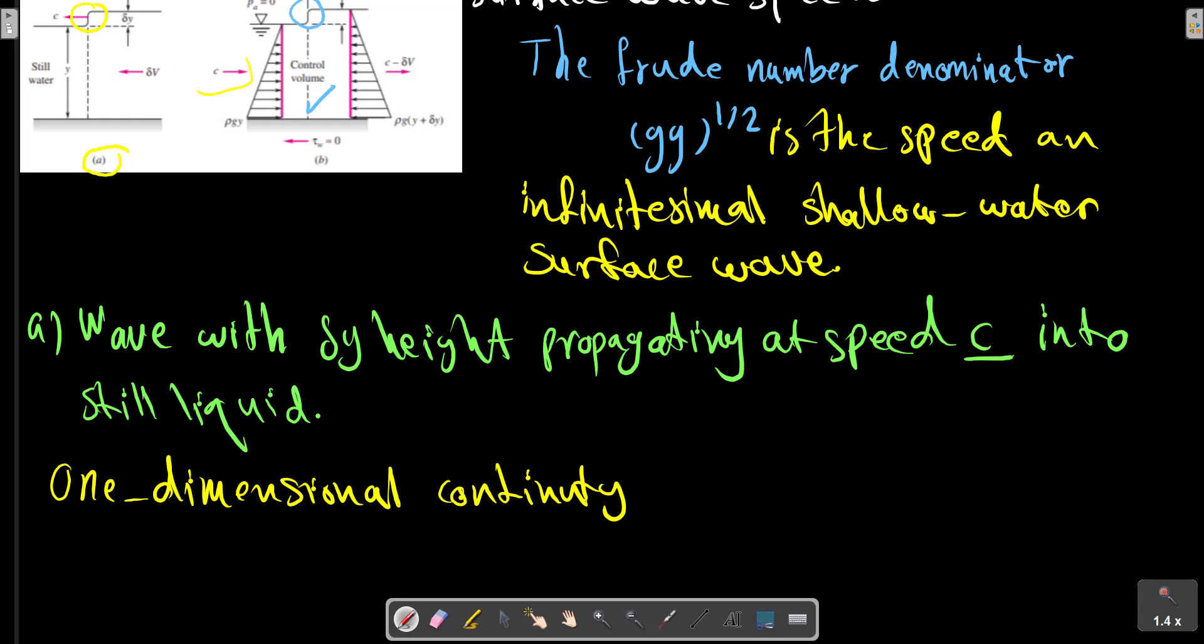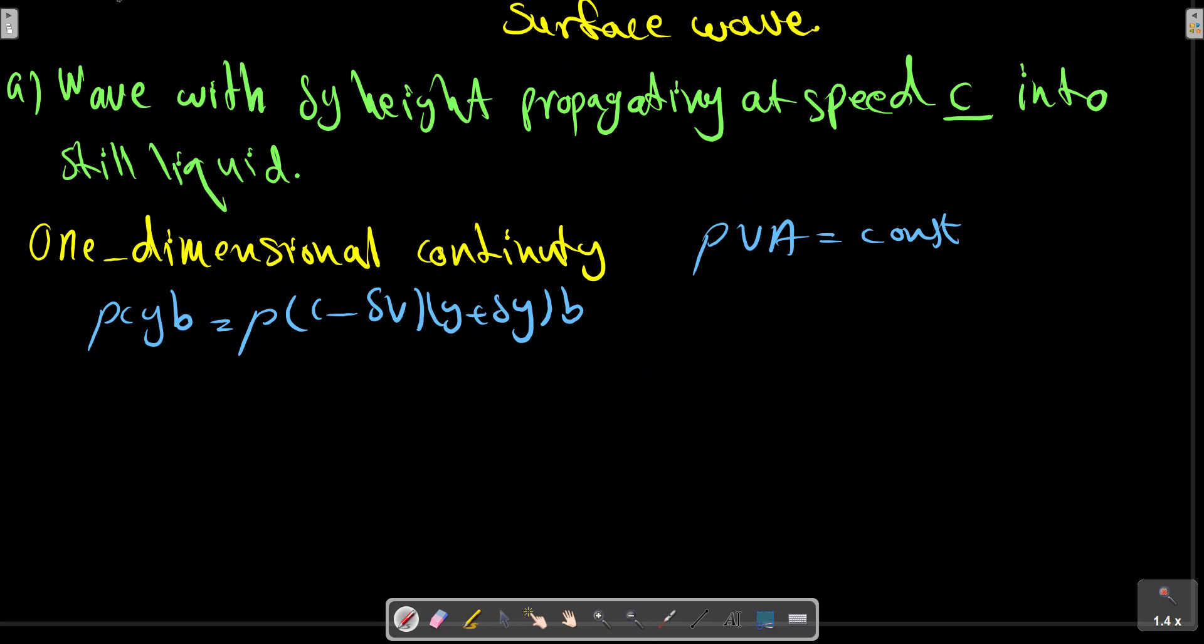For the two different speed and area, we have rho constant. So we can write for the ρ C Y B equals ρ Y plus delta Y times C minus delta V B.